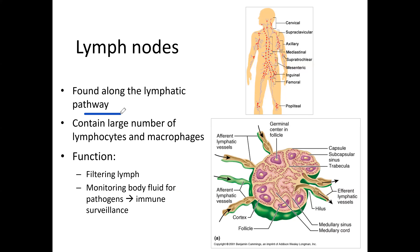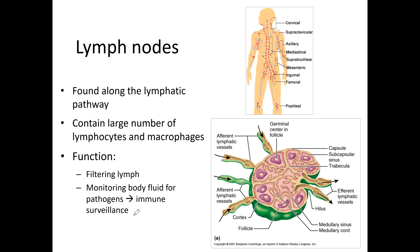Lymph nodes are found along the lymphatic pathway. Lymph flows through the lymph nodes and exits through efferent lymphatic vessels. They contain large numbers of lymphocytes and macrophages. The function of lymph nodes is to filter lymph and monitor body fluid for pathogens. Large numbers of lymph nodes are found in the inguinal/femoral region, the axillary region (armpit), and along the vertebral column.